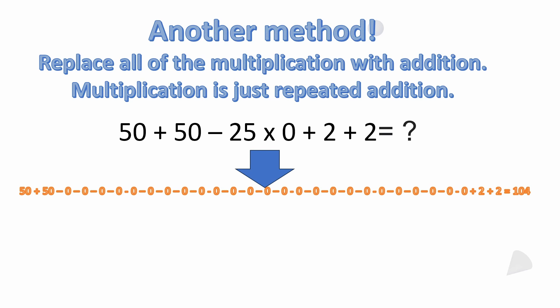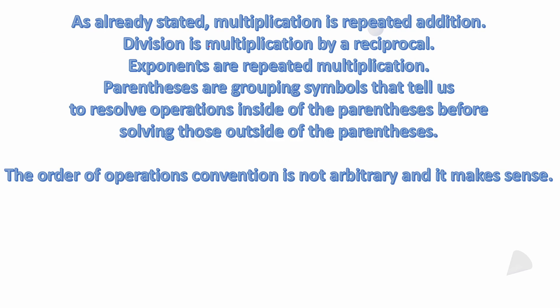So 50 plus 50 minus those 25 zeros plus 2 plus 2 is still 104. So the whole reason for that last thing, I know it looks like, well why would you do that, that looks silly, but all I'm trying to do is to mentally drive home to some people that multiplication is just repeated addition.